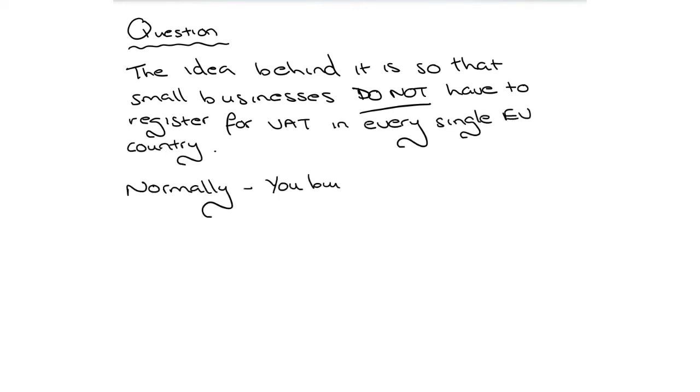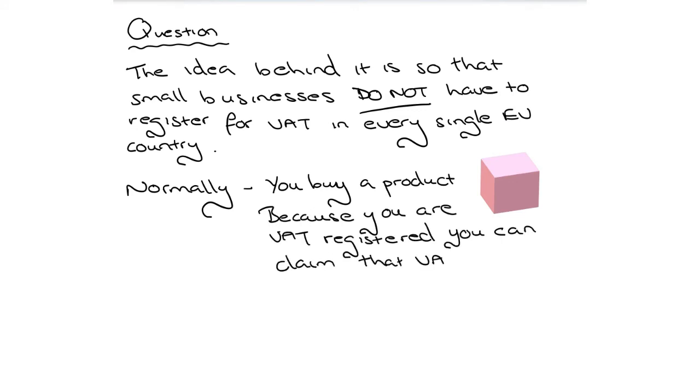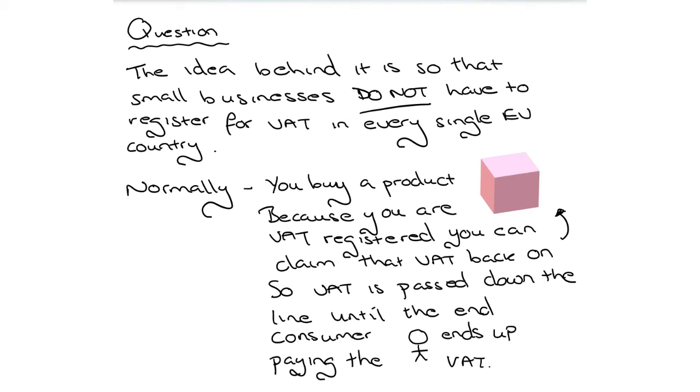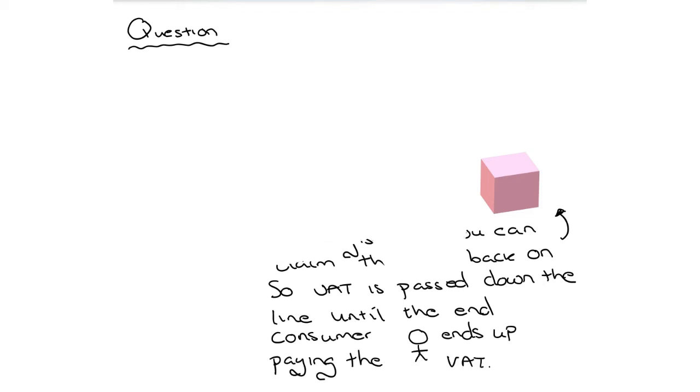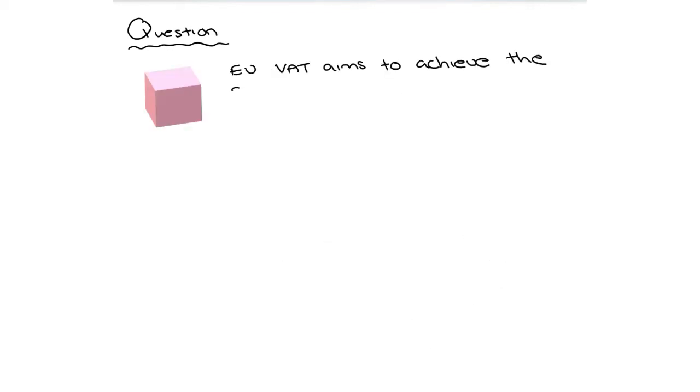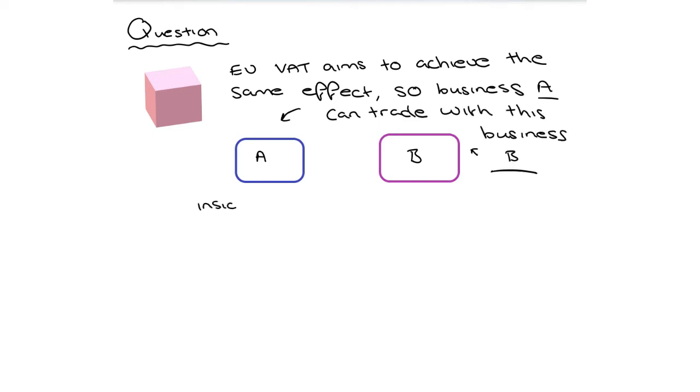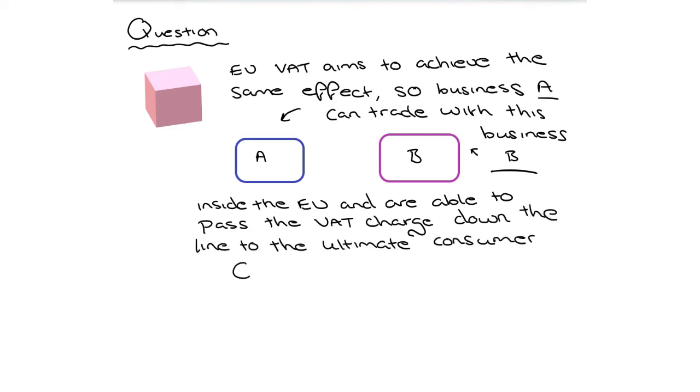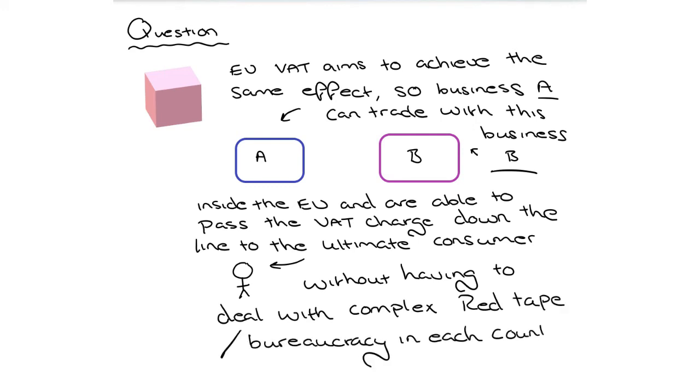So the idea behind it is so that small businesses do not have to register for VAT in every single EU country. So normally, you buy a product. Now because you are VAT registered, you can claim that VAT back on the product. So VAT is passed down the line until the consumer ends up paying the VAT. So the very person at the end, known as the consumer, they will pay VAT. Now, EU VAT aims to achieve that same effect so that business A can trade with business B inside of the EU and are able to pass VAT charge down the line to the ultimate consumer without having to deal with complex red tape or bureaucracy in each individual country.